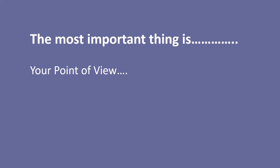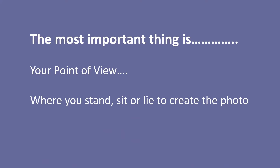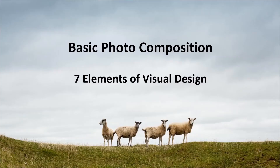Your point of view controls what's in the frame. Move your feet — many people are lazy and just take their photo from where they're stood or sat. You move around, get closer, don't be scared. What you're going to look for to put in the frame are these seven things, called elements of visual design. They're not just relevant to photography — they're relevant to all forms of art, particularly those that use a frame, like drawing and painting.